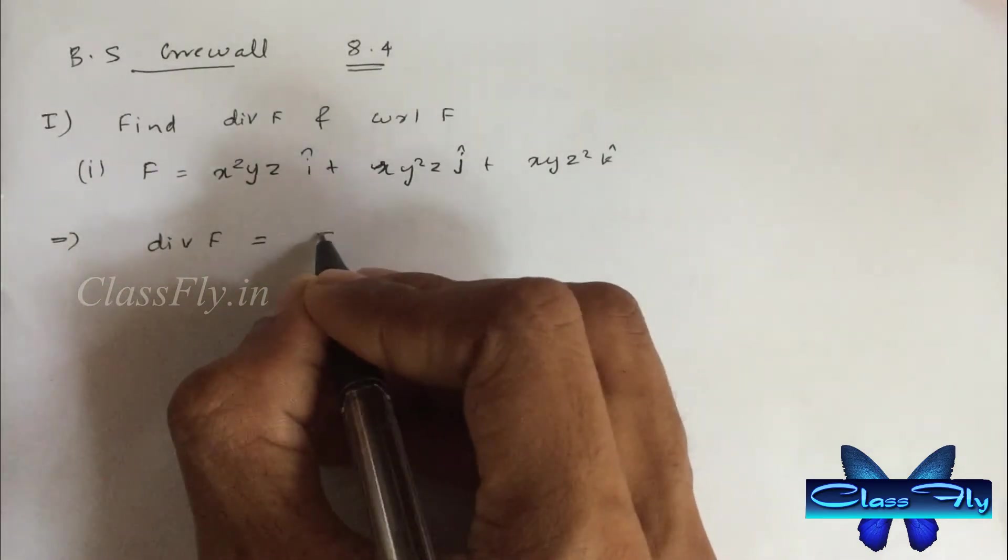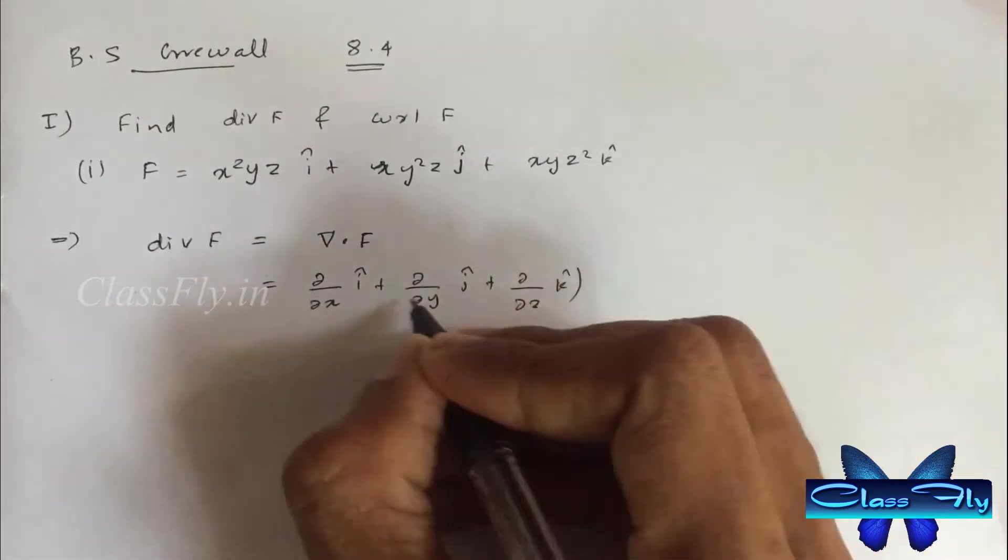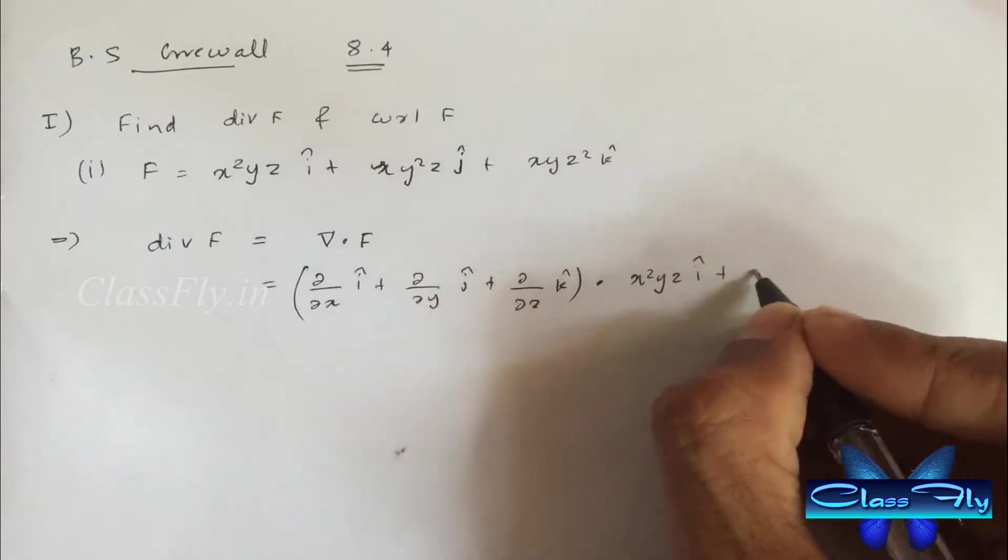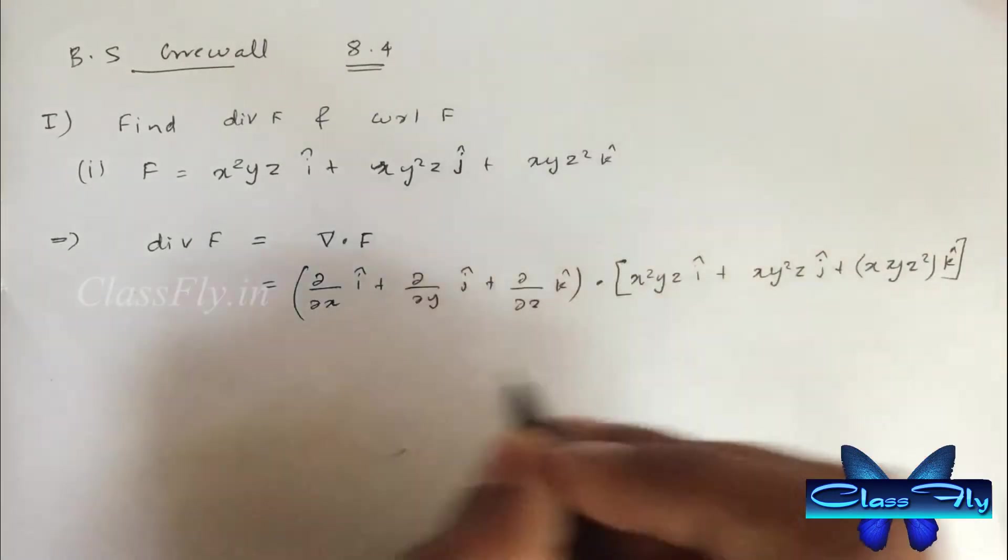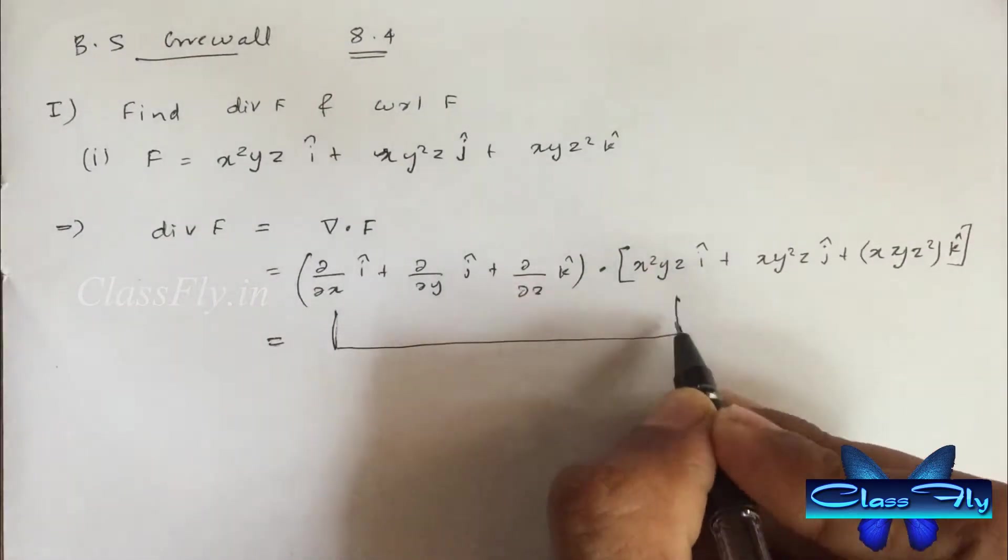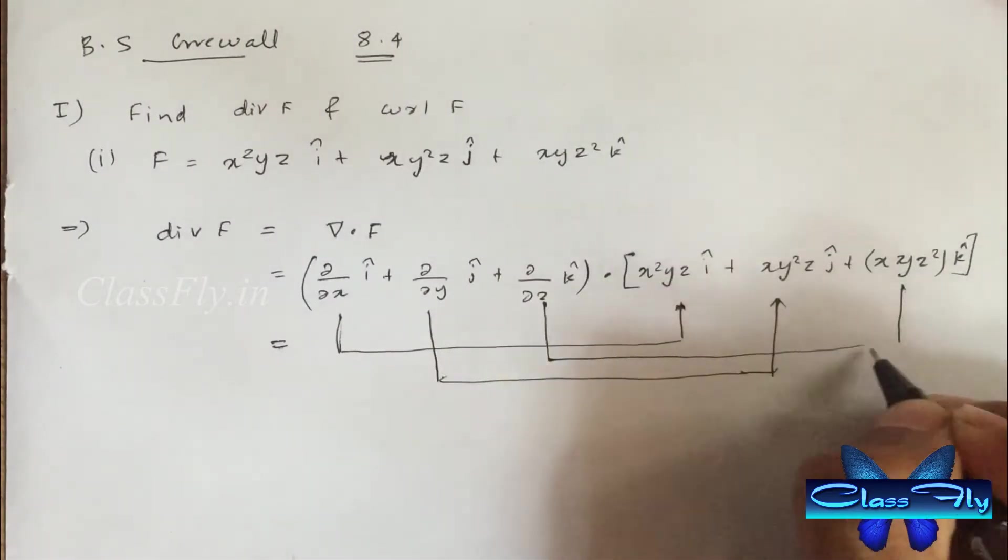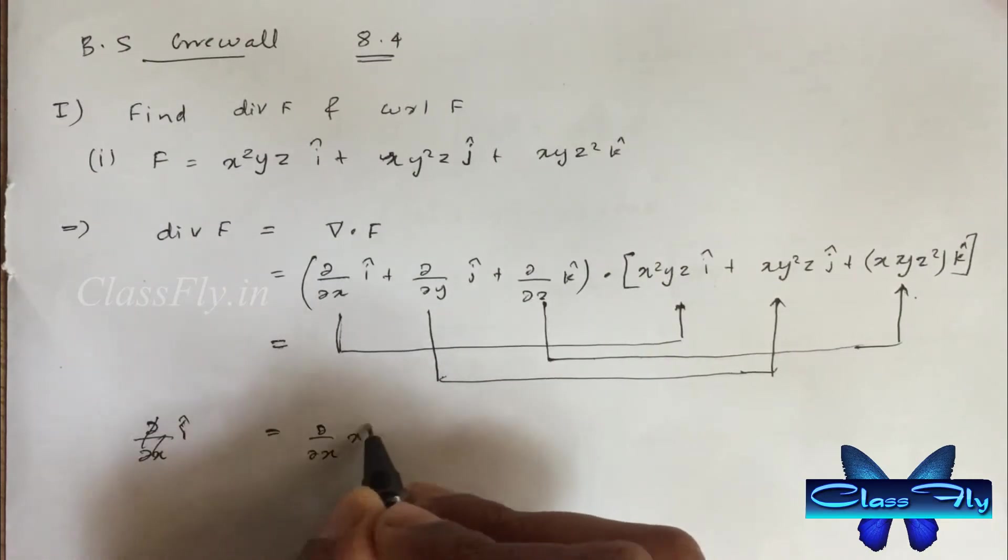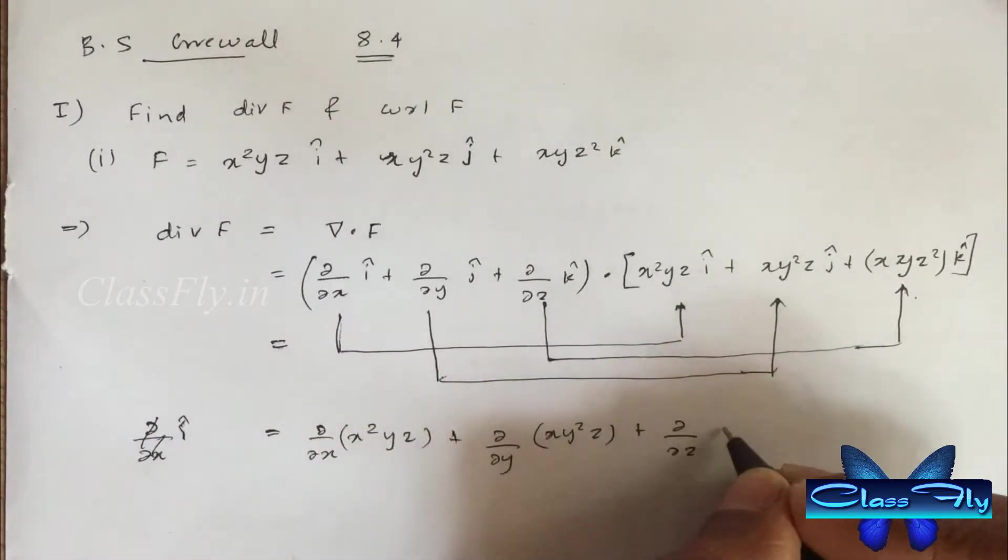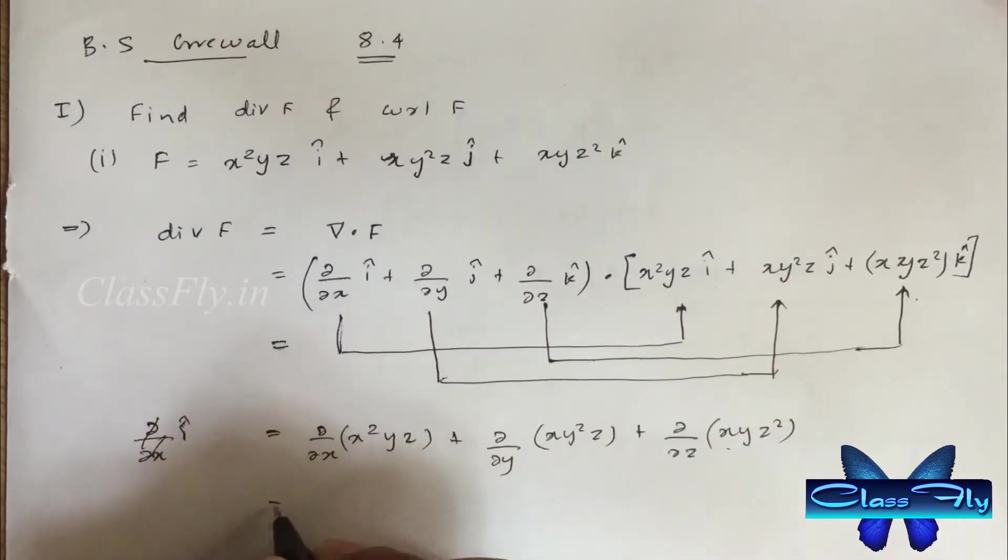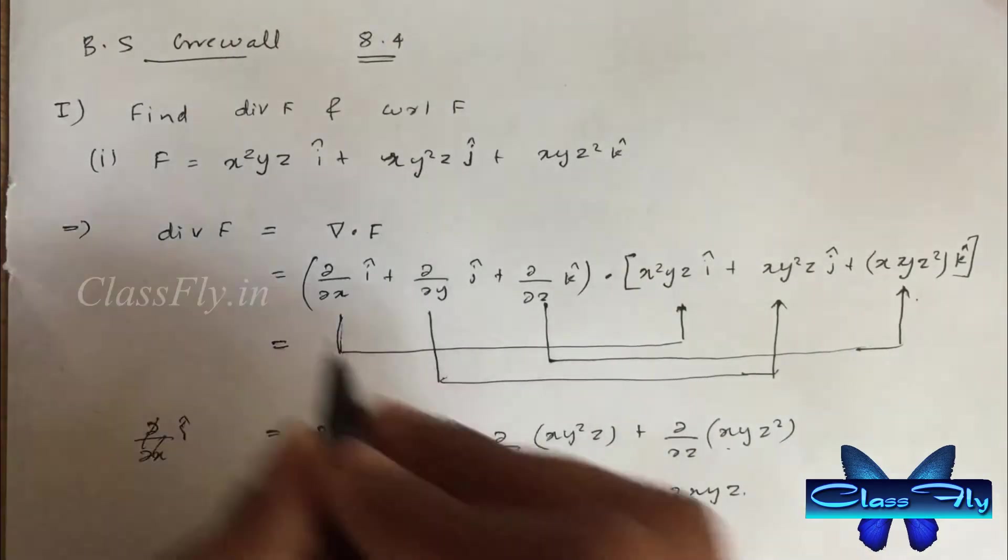Divergence F equals del dot F which is equal to d by dx i cap plus d by dy j cap plus d by dz k cap dot x square y z i cap plus x y square z j cap plus x y z square k cap. We have to take the dot product like this. After solving the dot product we get 6xyz.